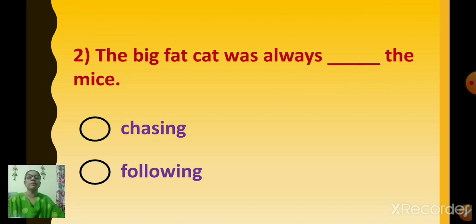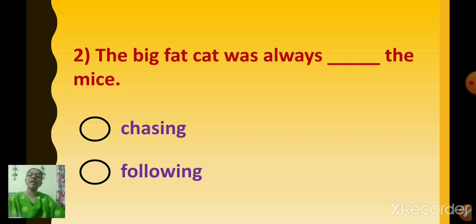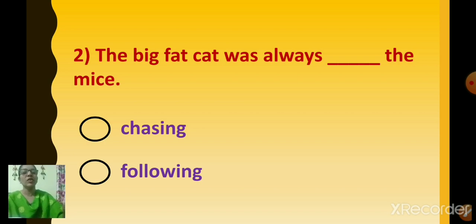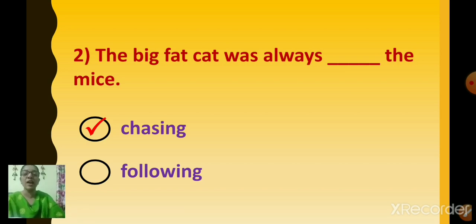Number two: The big fat cat was always dashed the mice. Was it chasing the mice or following the mice? Yes, the big cat was always chasing the mice. The answer is chasing. Click on chasing.